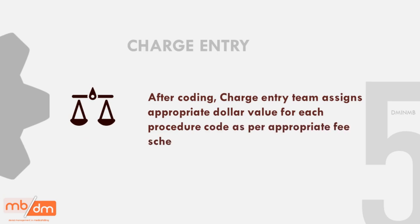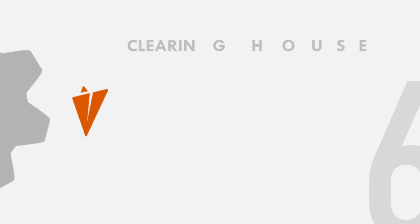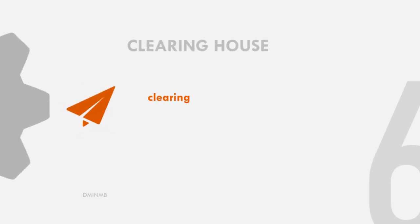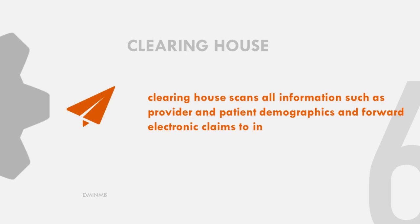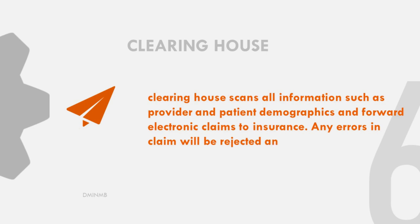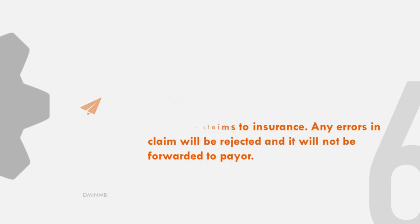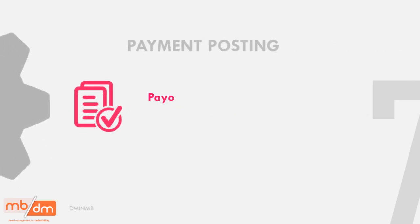Clearing house: the clearing house scans all information such as provider and patient demographics and forwards electronic claims to the insurance. Any errors in a claim will be rejected and it will not be forwarded to the payer.